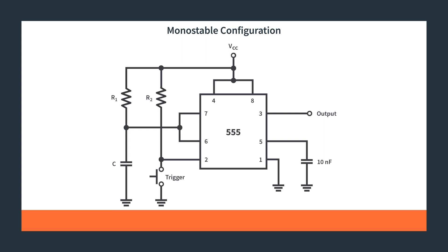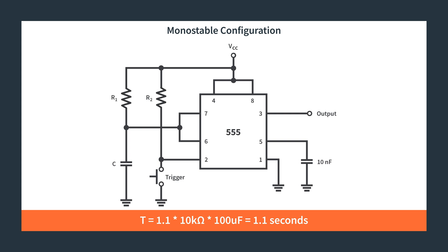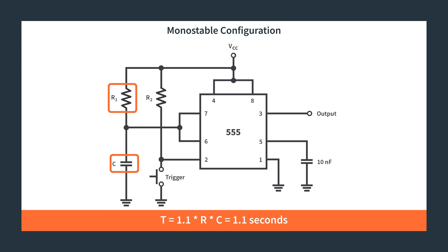The time constant I mentioned is actually R1 and C. Your time constant — how long this circuit will be high — is 1.1 times R in ohms and C in farads. For our practical circuit, I chose 100 microfarads and 10,000 ohms, so we get a time constant of around 1.1 to 1.2 seconds. It's this R1 and C that actually controls that.